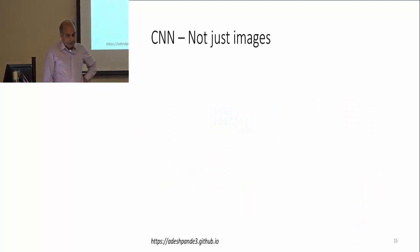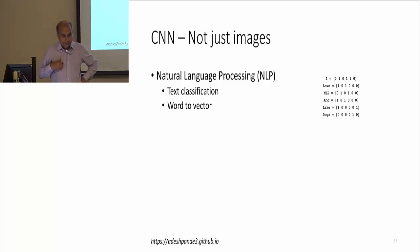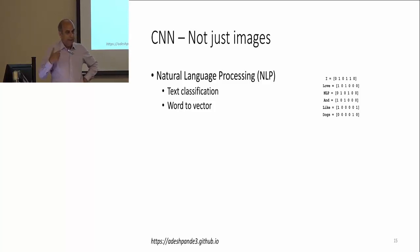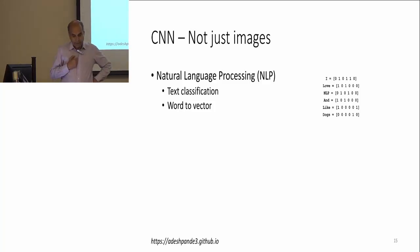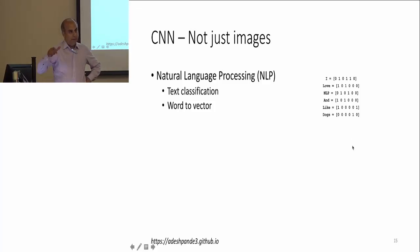CNNs are not only used for images but also for language and text — that's called natural language processing. You can take a document and classify text. An interesting technique used with CNNs is word-to-vector: each word is mapped to a vector, making it look like a row from an image, and then similar convolution operations can be applied.